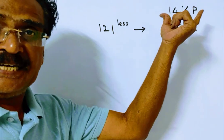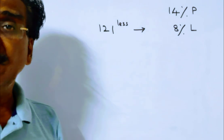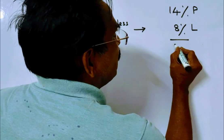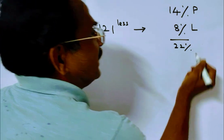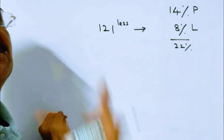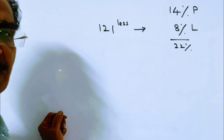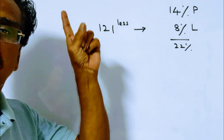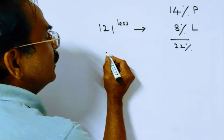So because of this 121 rupees less, earlier profit was 14 percent, now it is 8 percent loss. So the total loss is 22 percent—14 percent profit to 8 percent loss means a total change of 22 percent because of this 121 rupees less.